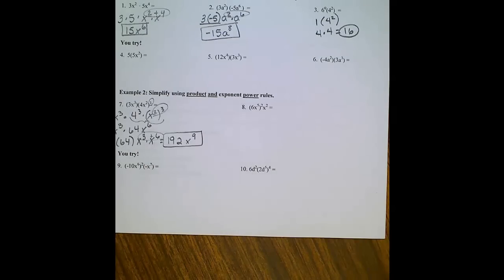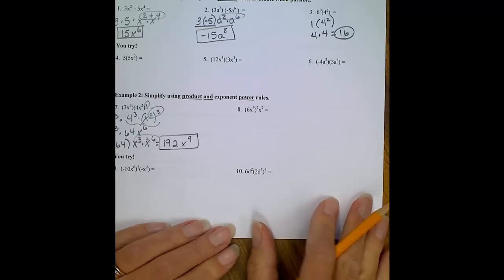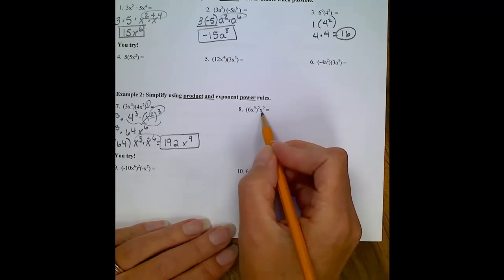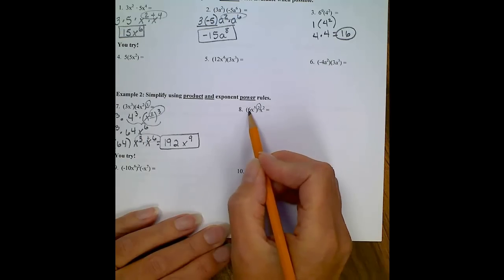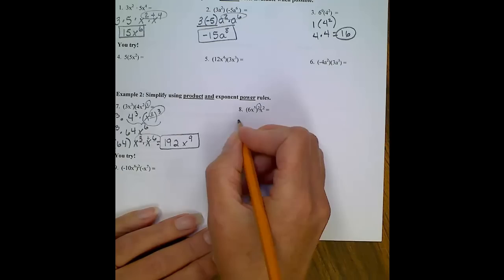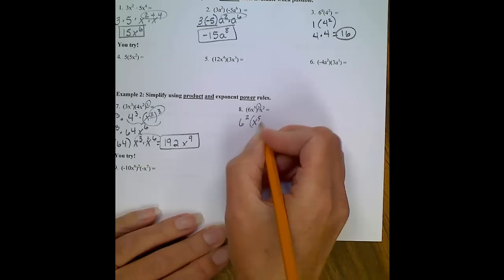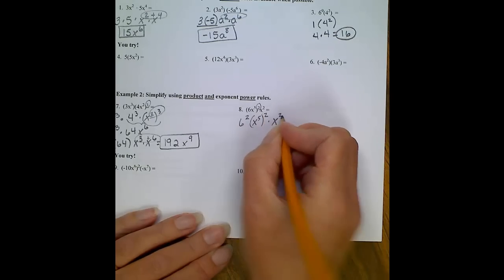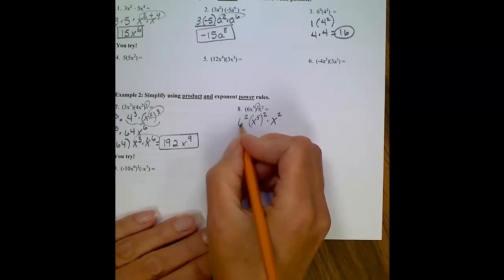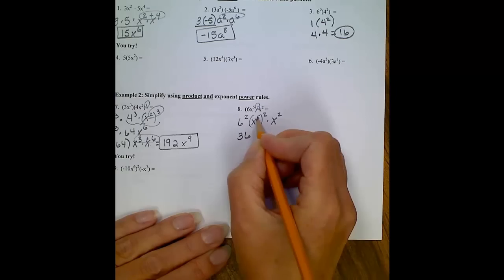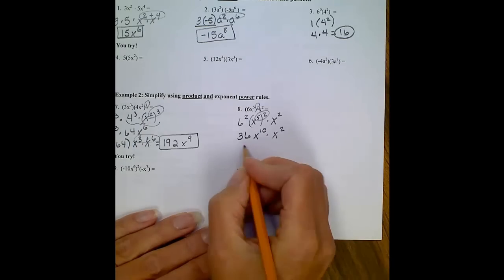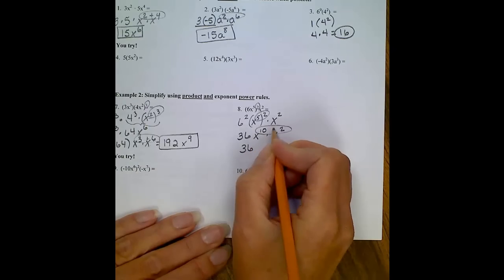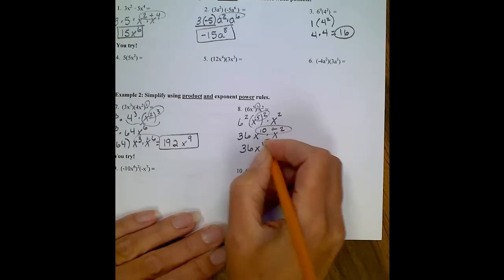You might want to pause the video, do a quick rewind, make sure that you completely understand this process. Number 8, same sort of idea. I have two terms I'm multiplying together, but one of them has an extra exponent. This exponent attacks every single term that's inside your parentheses. So I do a quick rewrite with that first, raising 6 to the 2nd power, and x to the 5th to the 2nd power. And then I bring down my x squared. 6 squared is 6 times 6, so you get 36. x to the 5th squared, multiply those exponents, you'll get x to the 10th, times x squared. We're almost done. 36 will stay 36. Again, we're multiplying these terms together, we add the exponents, x to the 12th. Circle your answer.